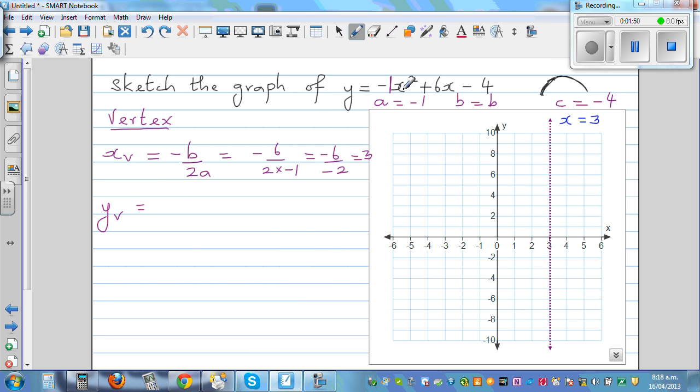This is negative times 3 squared plus 6 times 3 minus 4. Let's do this without a calculator. This is negative 9 plus 18 minus 4, which is 9 minus 4, which is 5. So your vertex is 3 comma 5.